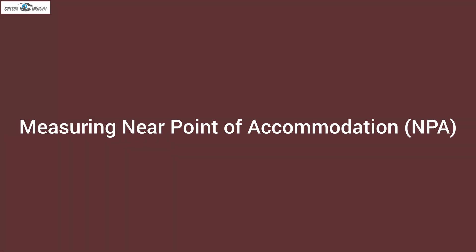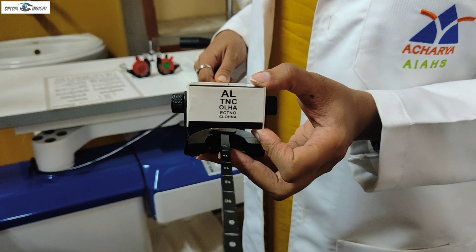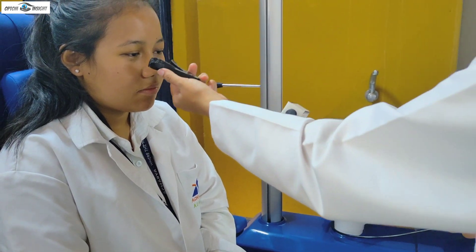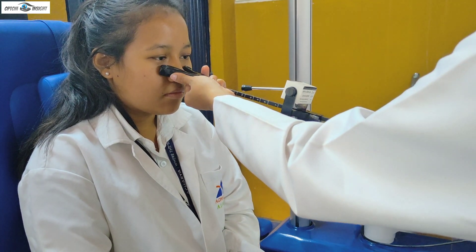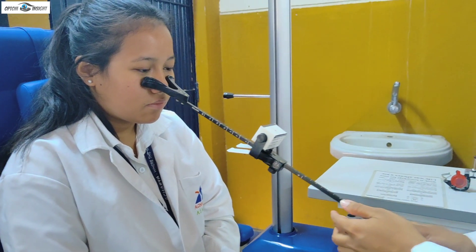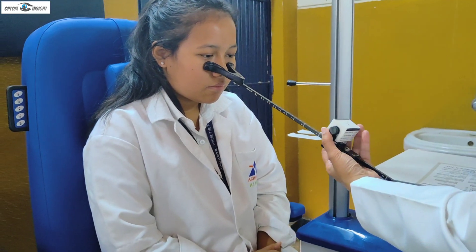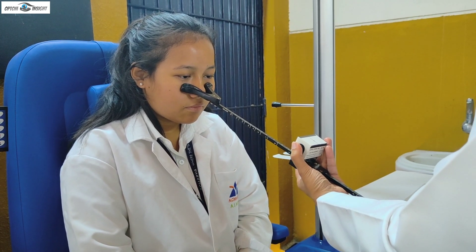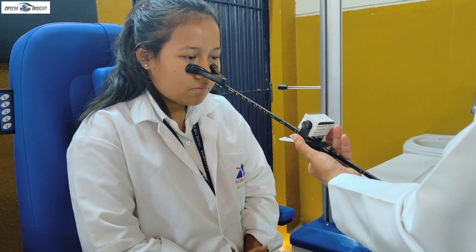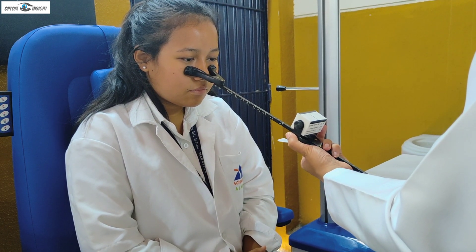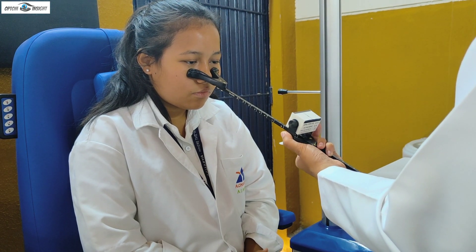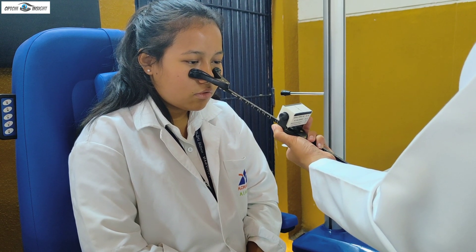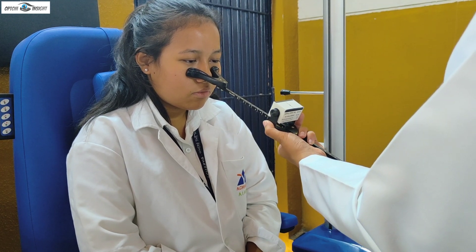Measuring NPA using the RAF rule: the reduced Snellen chart is used as a target for measuring NPA. Start the procedure by placing the cheek rest on the patient's cheek, holding the rule inclined at about 45 degrees in the depressed position. Make sure that the patient is wearing spectacle corrections if any. The patient is instructed to focus on the target one line above their best corrected vision, and asked to report when the target becomes blurred as the slider is moved toward the patient.